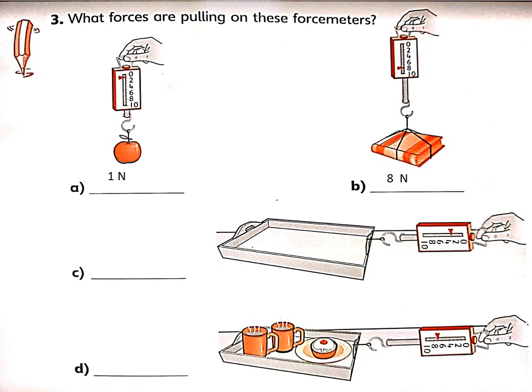The second one is a student book. I hang it on the force meter, and it measures 8 Newton. So this book is heavier than the apple, because it makes the spring stretch to 8 Newton. Then I put cups or plates inside a container — the reading points to 3 Newton. That is how much it pulls the spring down.